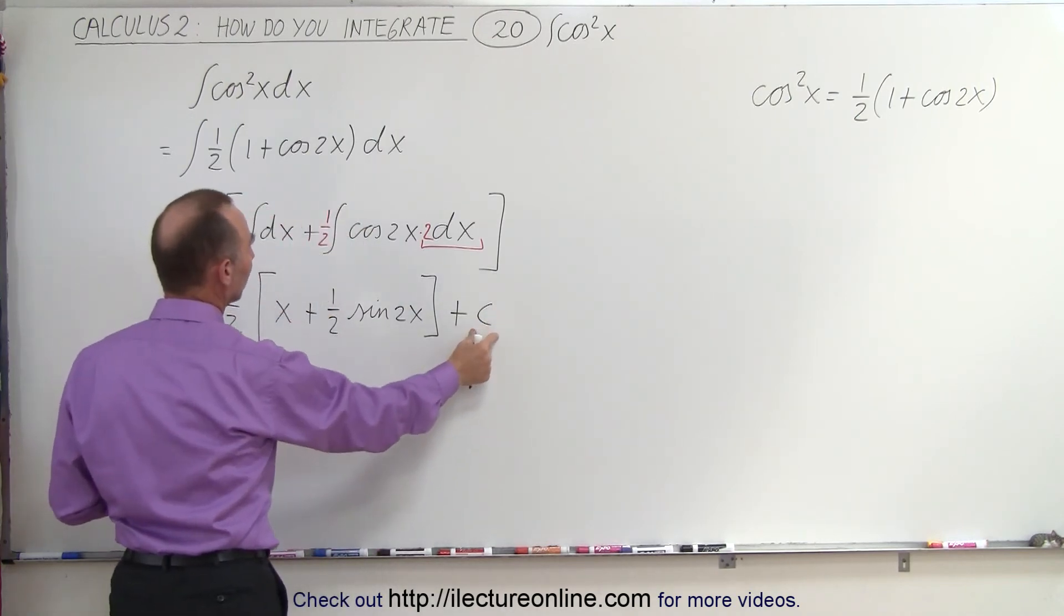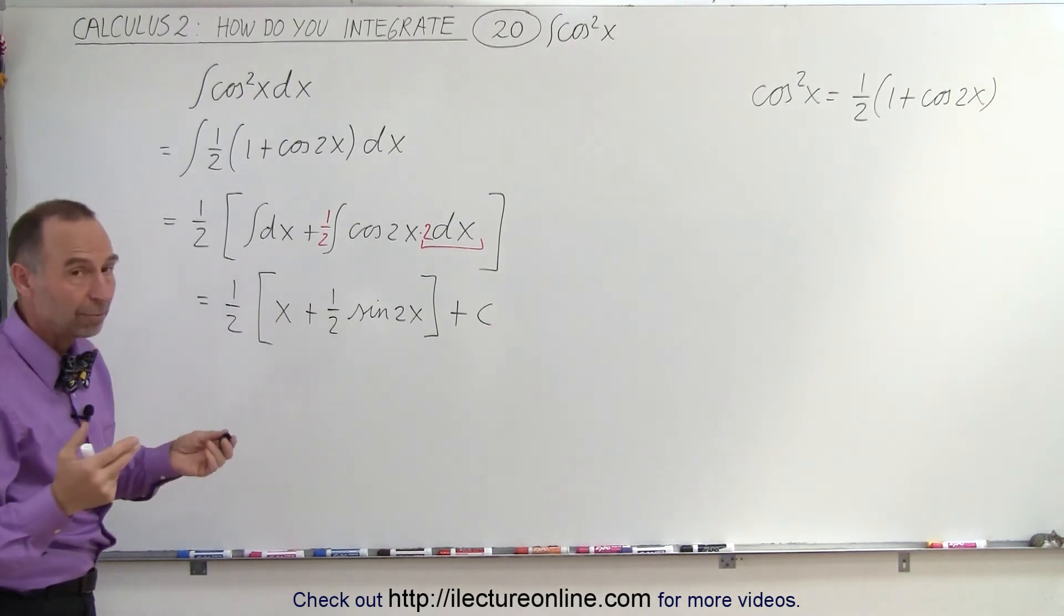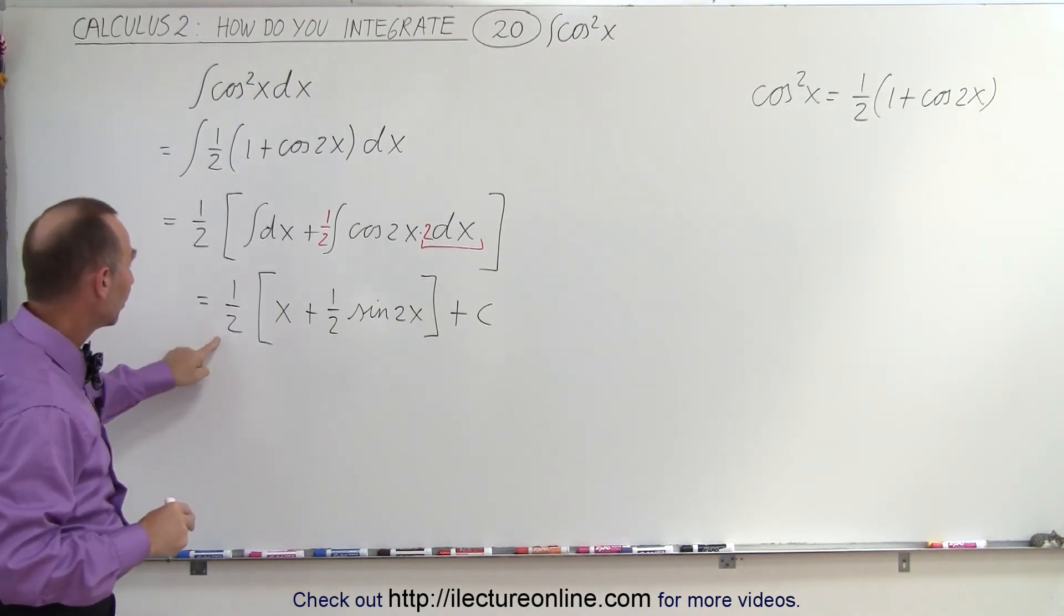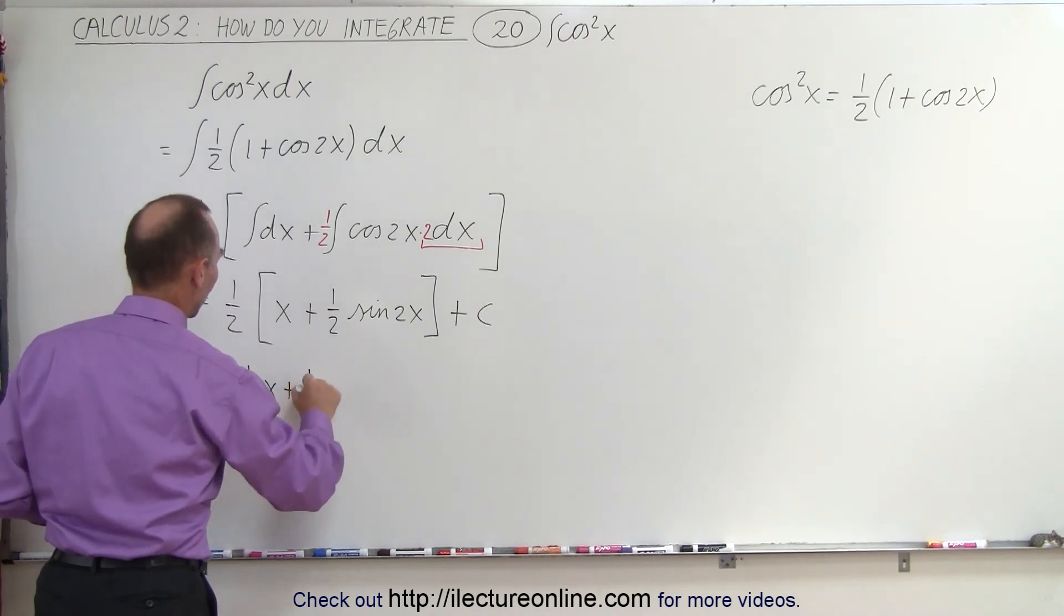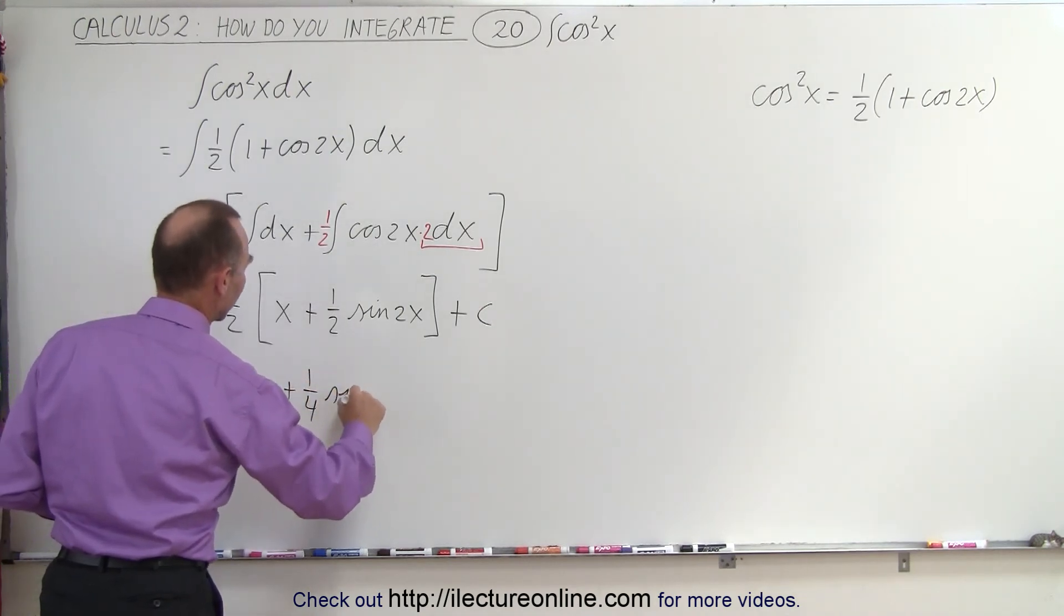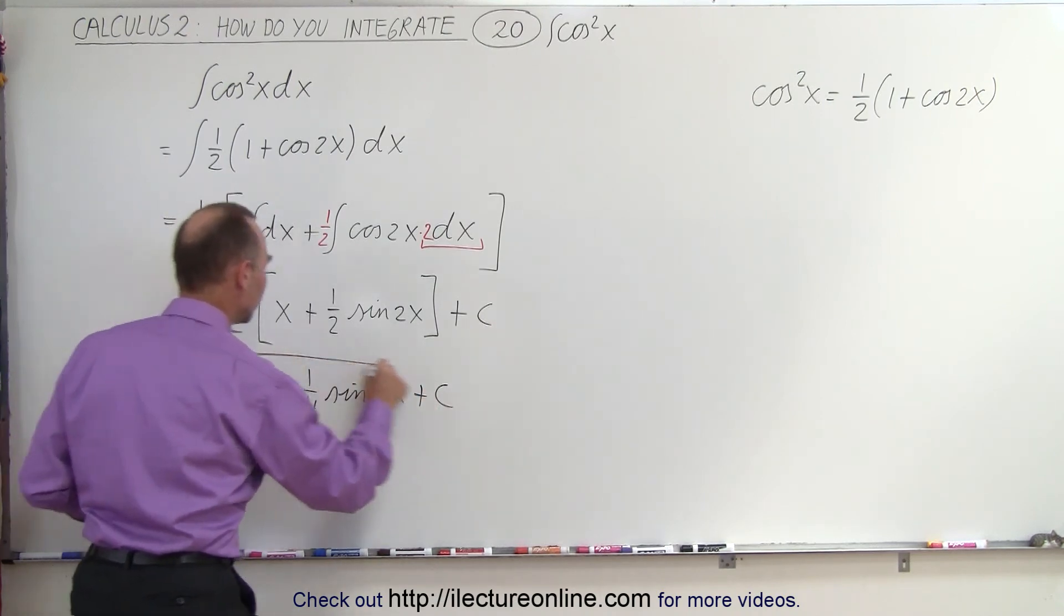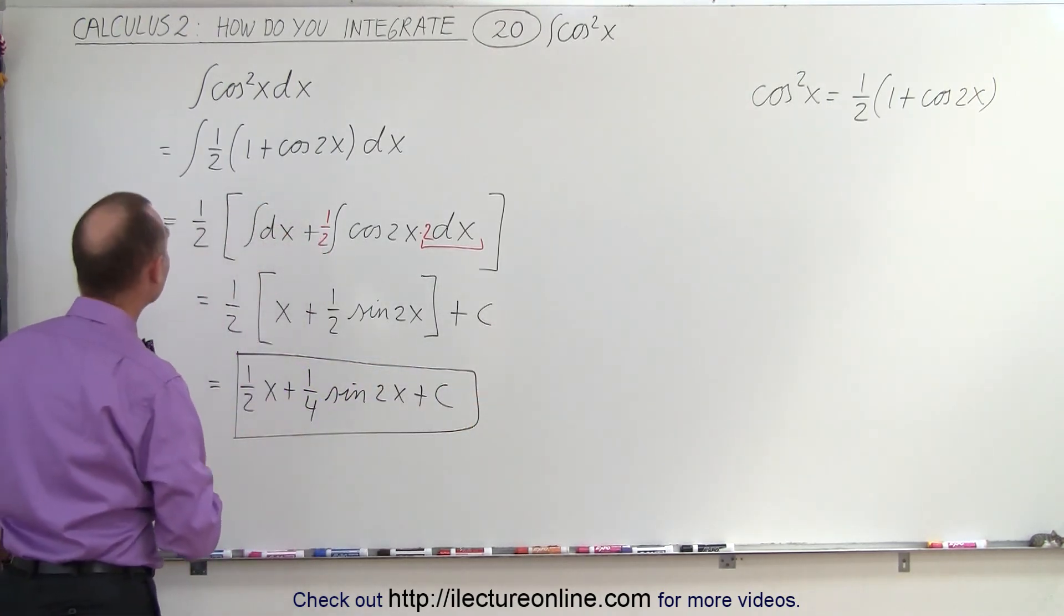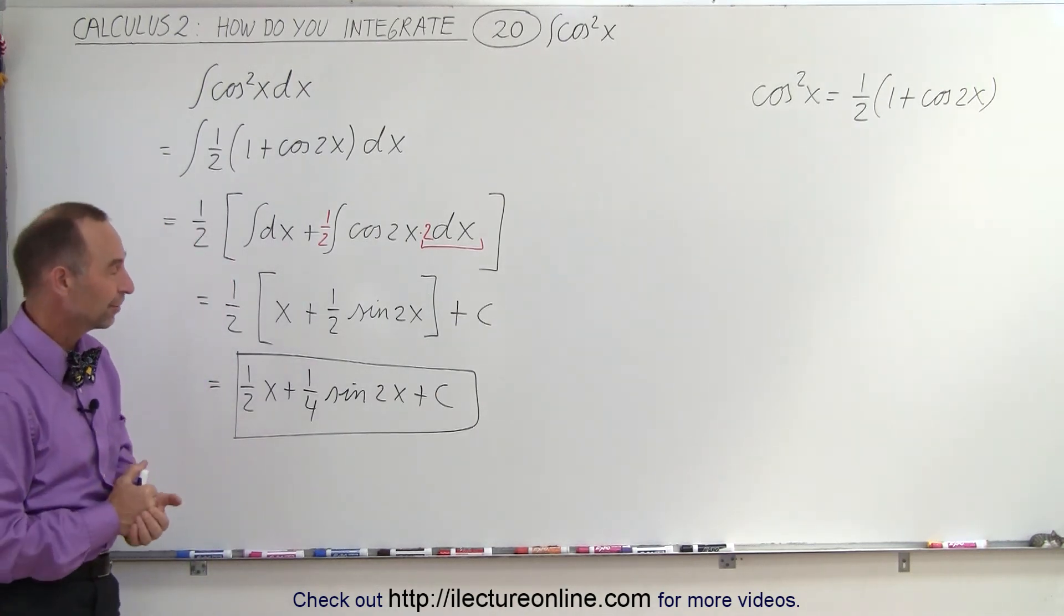This constant is the sum of the constants of the two integrals. And you just say plus c. Now we can put the one-half back in. And so this becomes equal to one-half x plus one-quarter the sine of two x plus a constant of integration, which is the result of the integral of the cosine squared of x dx. And that's how it's done.